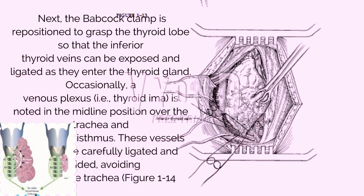Next, the Babcock clamp is repositioned to grasp the thyroid lobe so that the inferior thyroid veins can be exposed and ligated as they enter the thyroid gland. Occasionally, a venous plexus — i.e., thyroidima — is noted in the midline position over the trachea and entering the isthmus. These vessels are likewise carefully ligated and divided, avoiding injury to the trachea, figure 1-14.